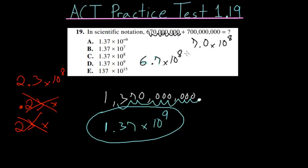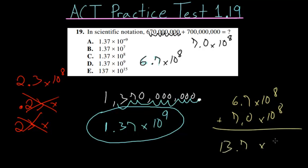And from here, we could just add these together. We'll do this as 6.7 times 10 to the eighth, plus 7.0 times 10 to the eighth, and what we get is 13.7 times 10 to the eighth.